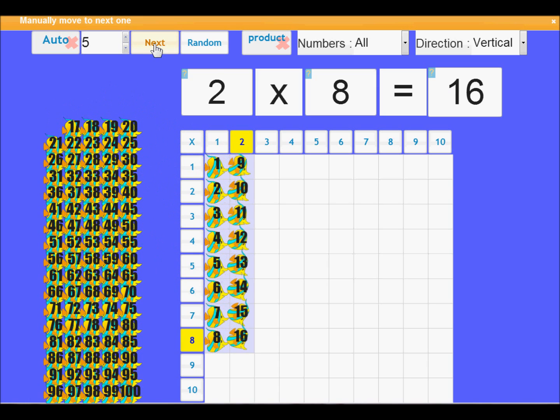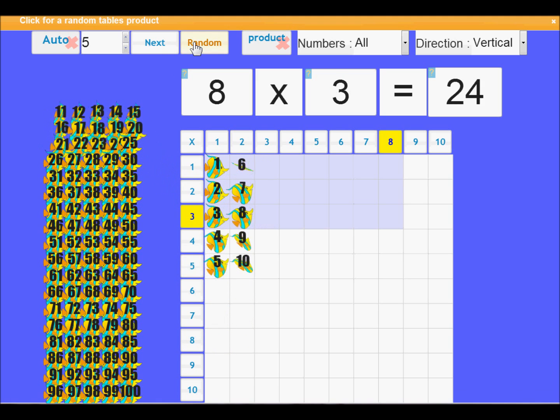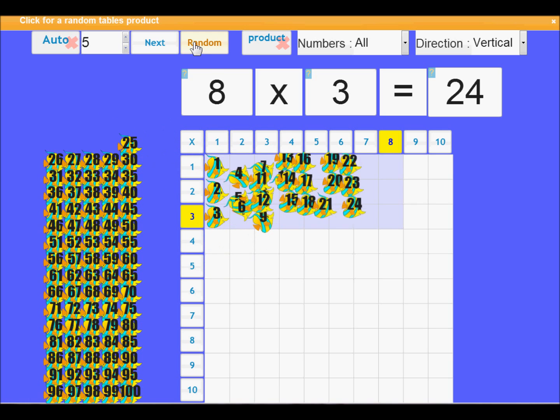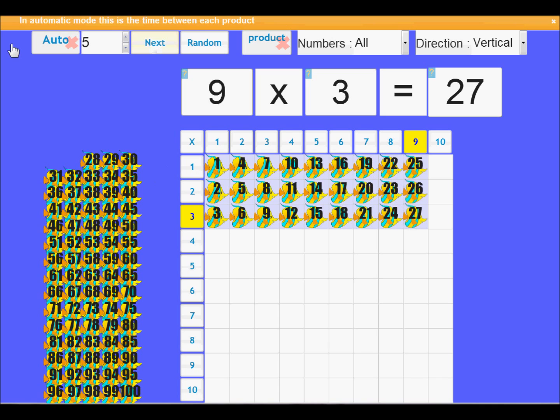So the next thing to look at is the random button. And you probably guessed, clicking the random button will create a random tables value. So this is a great way to blitz the class and see they know all the values. If you click next after random, it will also give you the next table value according to the direction.